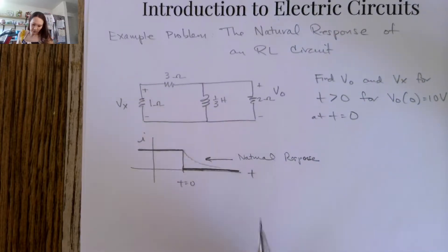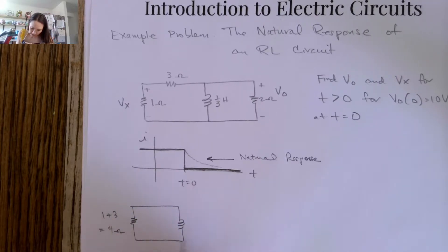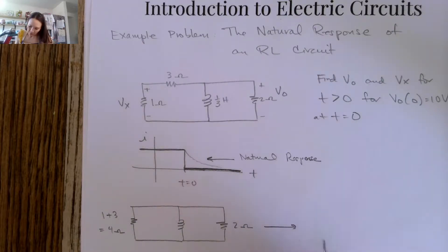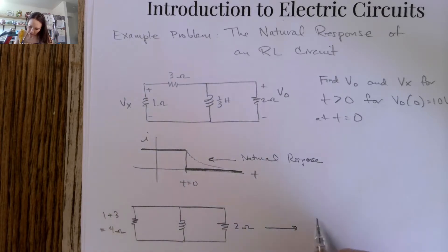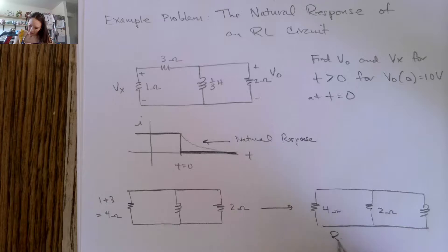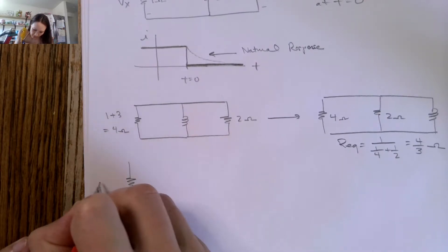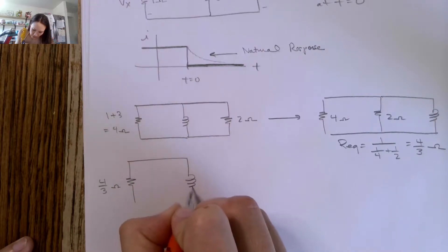Let's simplify this circuit first. These two resistors are in series, so they're equivalent to one resistor of value one plus three — four ohms. That's connected to this inductor, which is in parallel with this two-ohm resistor. You can see they're clearly in parallel. The equivalent resistance between those two would be one over (one over four plus one over two), which is four-thirds ohms. So these are equivalent to one resistor of four-thirds ohms connected to our inductor.